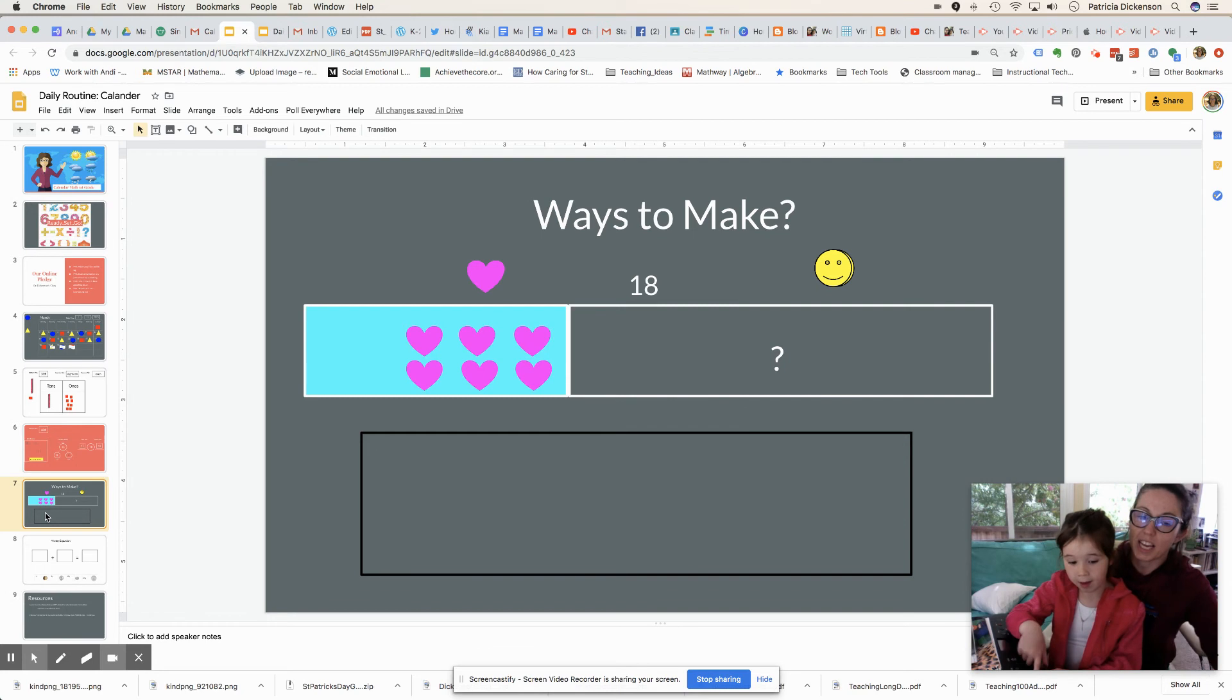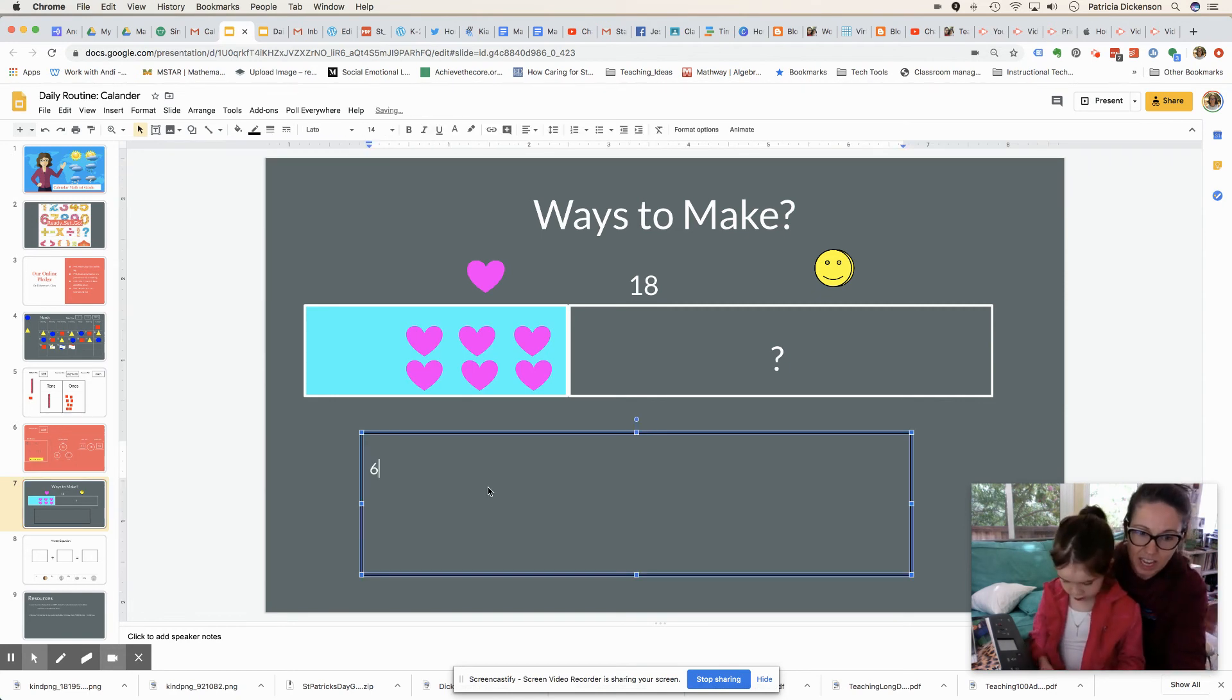Remember our ways to make 18? We have part, part, whole. So if one part has how many hearts there? Six. Six. Then what's the missing part? Twelve. Very good. How did you know it was twelve? Because six plus ten is sixteen. You just need one more six. Okay. And is there another way that we could have made 18? Can you think of another way in your head? Oh, yes.